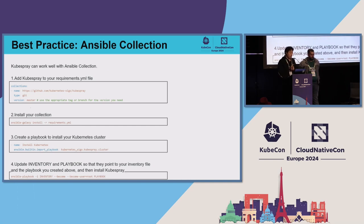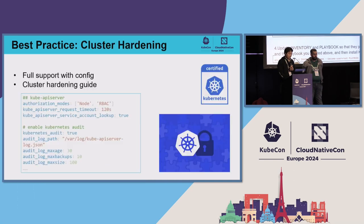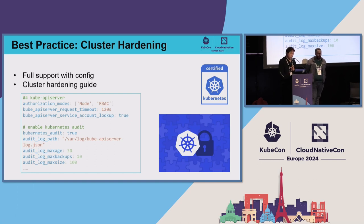Another important note: Kubernetes certificates expire every year, so KubeSpray has a script to auto-renew them every month. Recently we added a new feature for Ansible collection — KubeSpray can be incorporated with other Ansible collections. You can declare it in the Ansible collections requirements YAML file, then use Ansible Galaxy to install KubeSpray so it can be used normally. Another thing is cluster hardening — to make a cluster more secure, you can use various configs. For example, authorization, request timeouts, and audit logging are very important. We have a document in the GitHub repo for this.